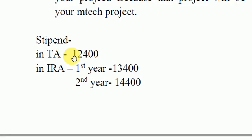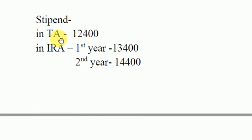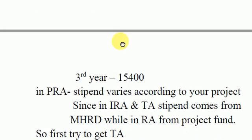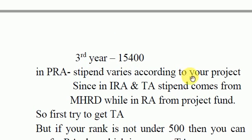Another difference between TA and RA is the stipend. The stipend in TA is from MSRD, which is 12,400 rupees. In IRA: first year you get 13,400, second year 14,400, and third year 15,400 rupees. In PRA, the stipend varies according to your project.